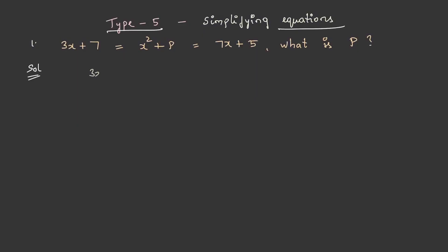Let us simplify the equations: 3x + 7 = x² + p = 7x + 5.